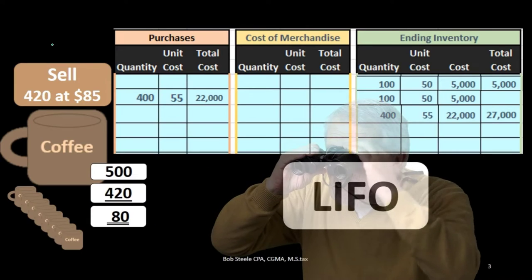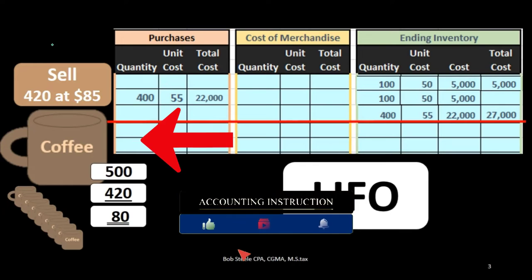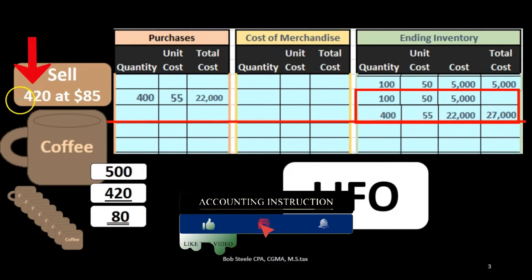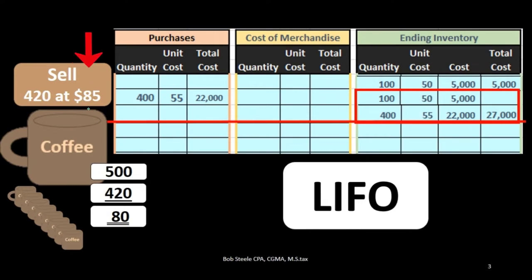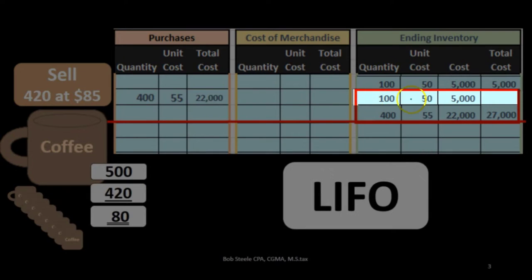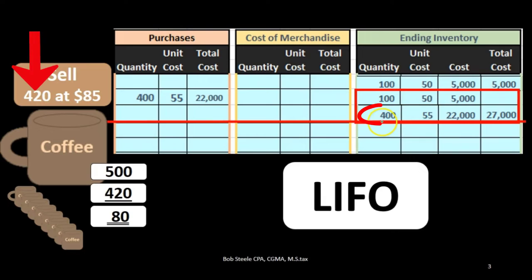Looking at an example, suppose we are selling coffee mugs and we plan to sell 420 mugs at $85 — that $85 is the sales price, not the cost. To find the cost, we go to our worksheet, where we see we purchased 100 units at $50 for $5,000 of inventory, and another 400 units at $55 for $22,000 of inventory. If we sold 420 units, the question is: what is the cost of those 420 units — the $50 or the $55?